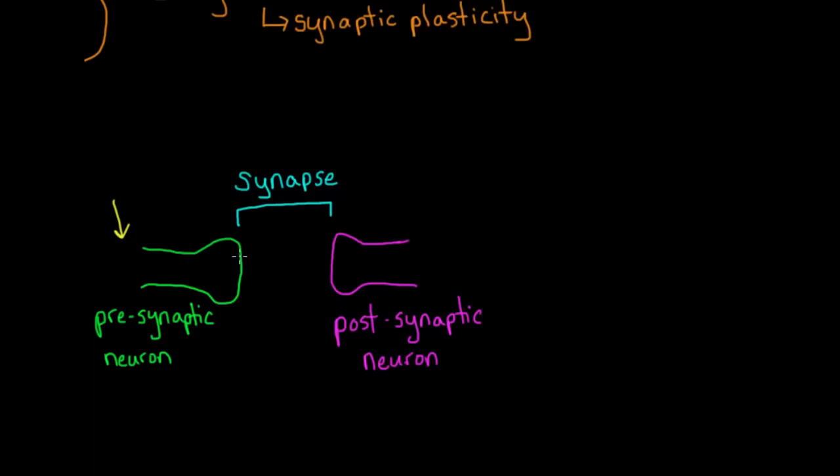When the presynaptic neuron is stimulated, it releases neurotransmitters, or special chemicals, which then bind to receptors on the postsynaptic neuron, opening channels to allow ions, such as sodium and calcium, to flow in.